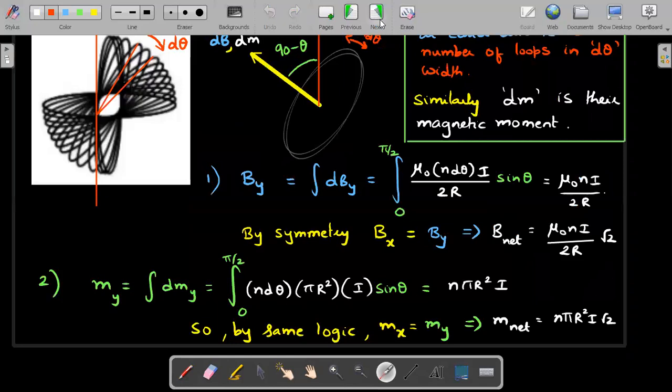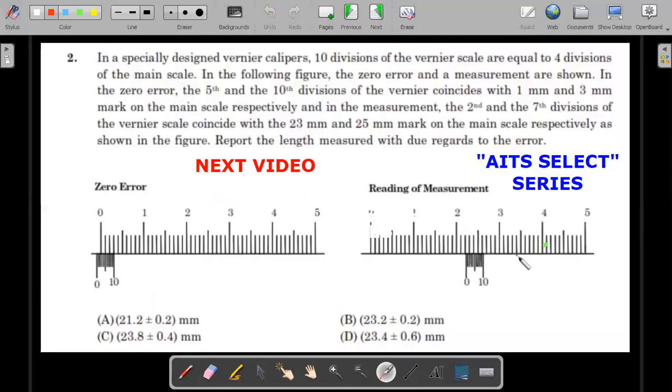Let's move ahead for the next video. This is for your next video, I have taken up a question from the Allen AITS that has happened this year. This is a very good question on vernier calipers. Vernier calipers and screw gauge questions often appear, I think at least one question in one of the two papers every year and the questions generally are not very straightforward like in JEE Mains. This is based on the error correction in the vernier calipers. I don't want to read the question for you, try to read it out on your own and try to mark the option, best possible answer that you can get.